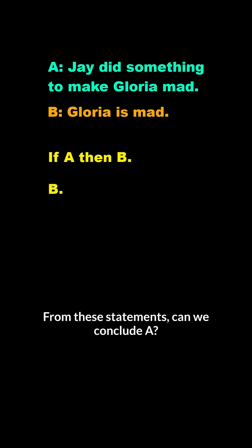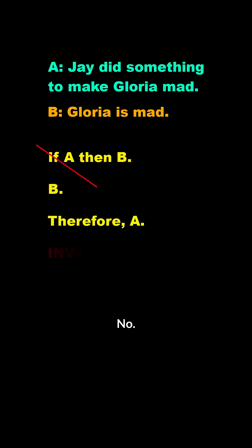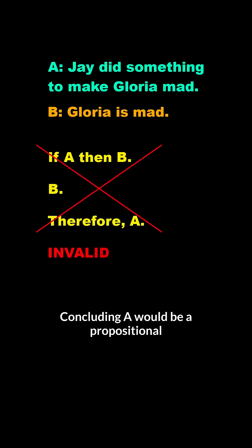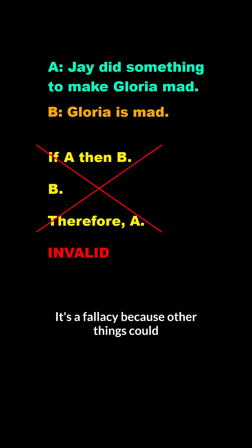From these statements, can we conclude A? No. Concluding A would be a propositional fallacy called affirming the consequent. It's a fallacy because other things could have made Gloria mad, like her son.